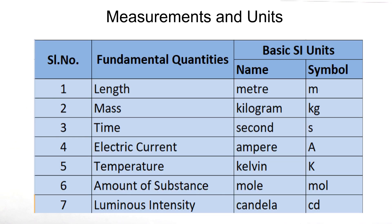The SI unit fundamental quantities are listed in a table: length, mass, time, electric current, temperature, amount of substance, and luminous intensity.